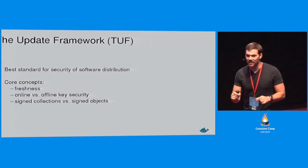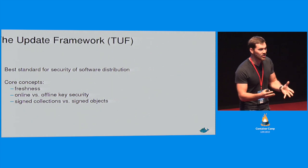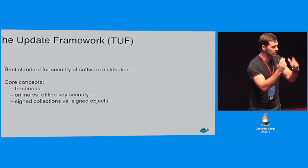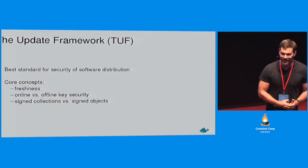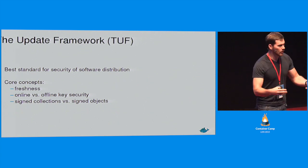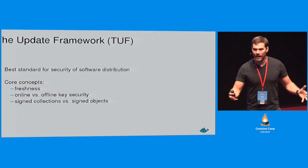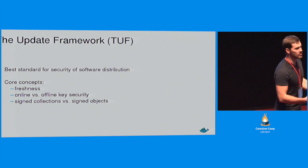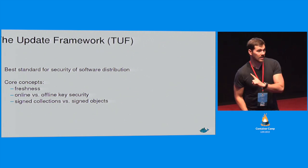We did not invent TUF. It was made by researchers in 2009, and curiously it was originally built for distributing Tor. Tor has a very interesting attacker model — it protects against nation-state attackers fighting dissidents who want to install malicious code on their computers. They developed a software update mechanism that resisted sophisticated attackers with very interesting security properties, and that is where TUF comes from.